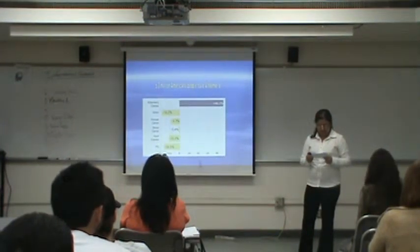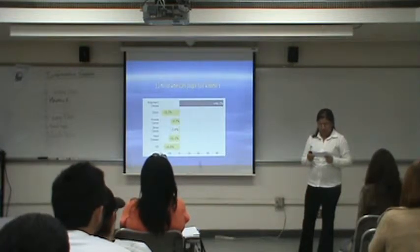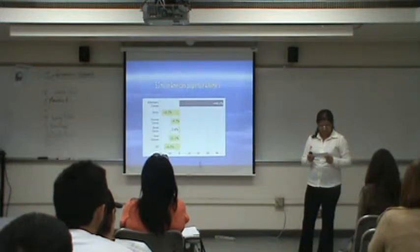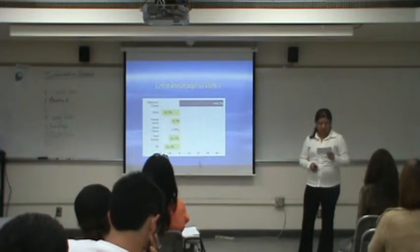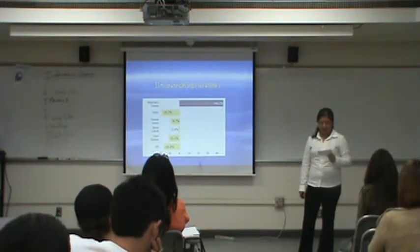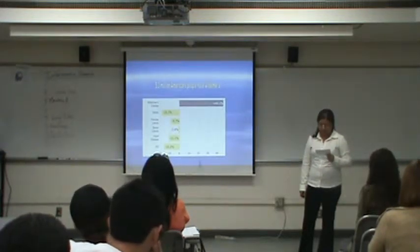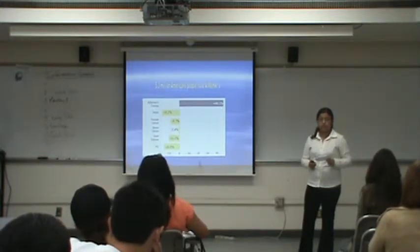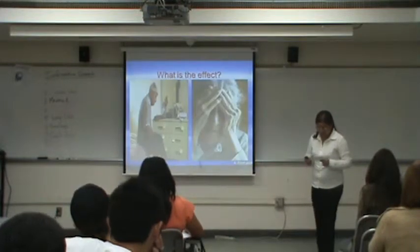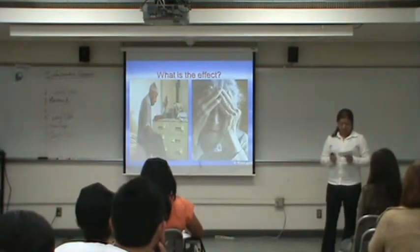According to the book, a hundred questions and answers about Alzheimer's disease, the brain has a hundred billion nerve cells, or neurons. These nerve cells have special jobs — some are involved in thinking, learning, and remembering, and others help us see, hear, and smell.